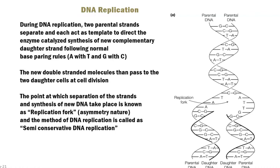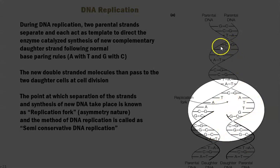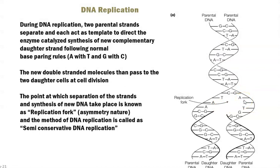DNA replication is a very important process in cell reproduction. Only after the complete replication of the DNA molecule will it be separated and passed on to the next generation of cells. During the process of DNA replication, two parental strands separate — you can see on the right-hand side that two parental strands are getting separated.